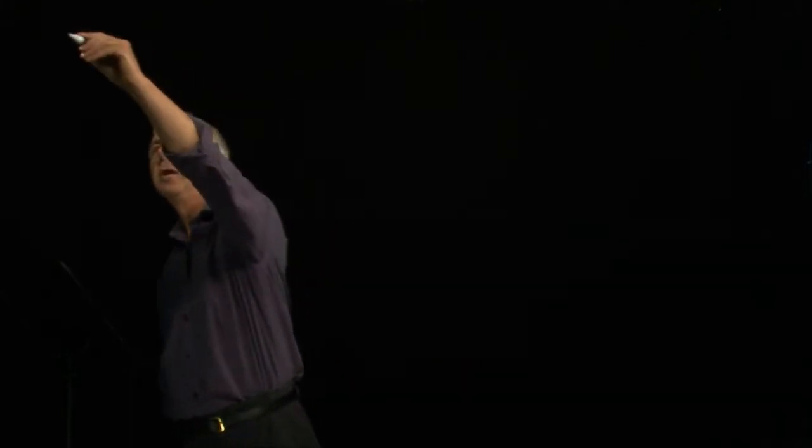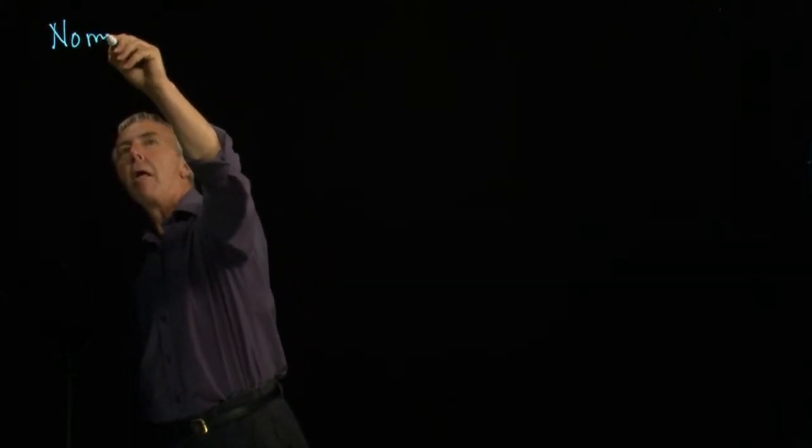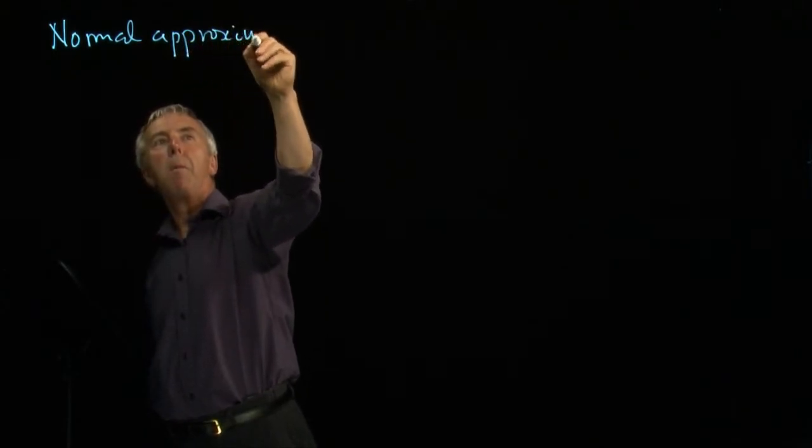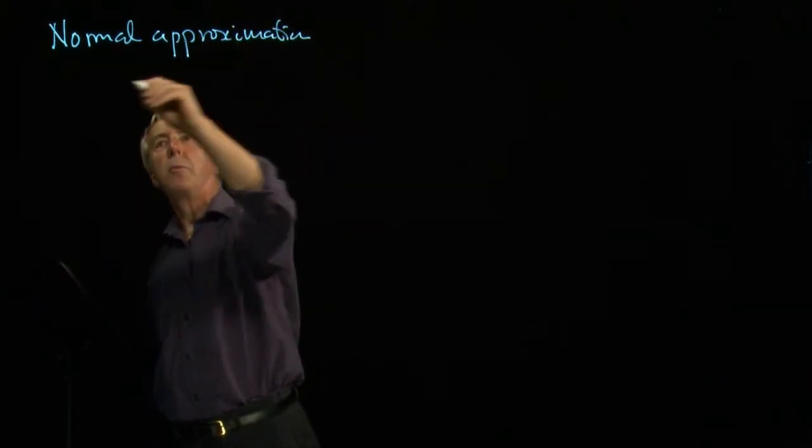Another approximation that is useful in a particular circumstance is when a Poisson distribution has a very large mean. It turns out we can replace that by the normal. So this is the normal approximation to the Poisson.